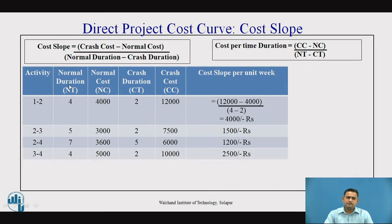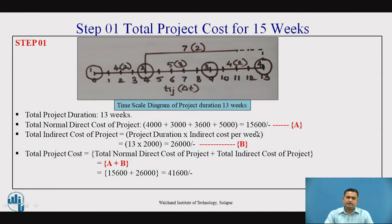In this table, the normal duration costs are 4,000, 3,000, 3,600, and 5,000. Their summation gives 15,600. The total indirect cost of the project equals project duration multiplied by indirect cost per week. So, in the initial stage without crashing, the overall total project cost is total direct cost plus total indirect cost, which equals 41,600.